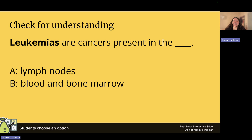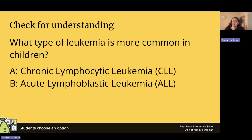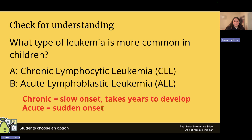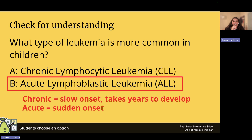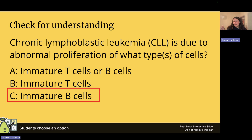Check for understanding: leukemias are cancers present in the blood and bone marrow — because 'emia' means blood. The type of leukemia more common in children is ALL — acute lymphoblastic leukemia. Acute means sudden onset, while chronic means slow onset over years; chronic is more common in adults. CLL — chronic lymphoblastic leukemia — is due to abnormal proliferation of B cells. A memory trick: CLL and B cells — almost the alphabet, but backwards.